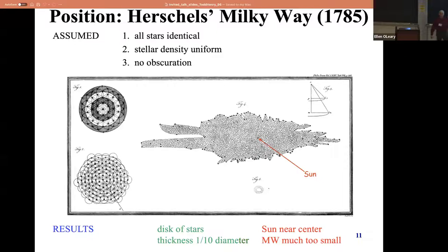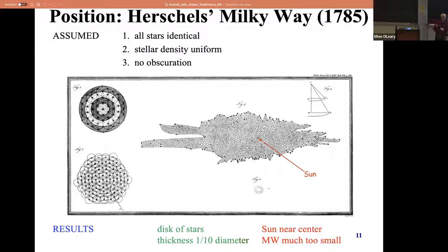They got the fact that the Milky Way is a disk. We weren't even sure we lived in a galaxy, or that there were other galaxies - we didn't know that back then. They figured out it's thinner in one direction than another, so they got the basic shape right. They're off by a factor of 10, but for that technology, that's pretty good. They put the sun near the center, which is wrong, and got the Milky Way being too small. But still using astrometry positions alone, they figured out the shape and generally where the galaxy was.